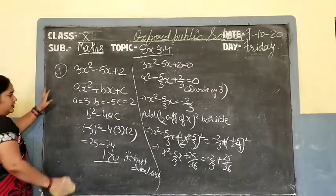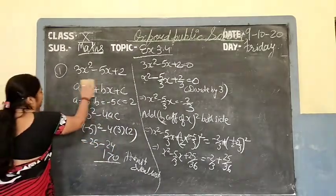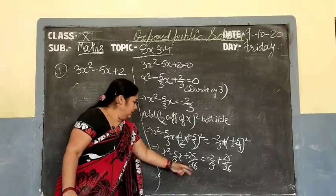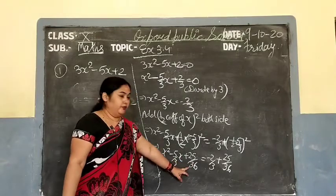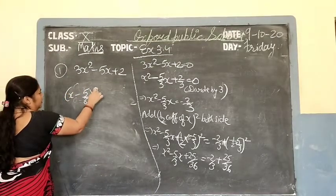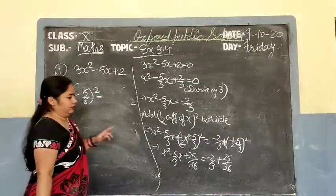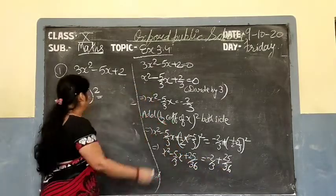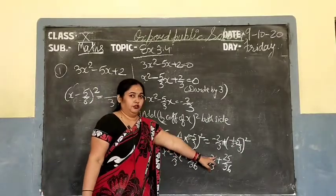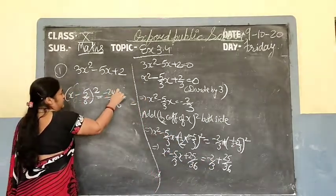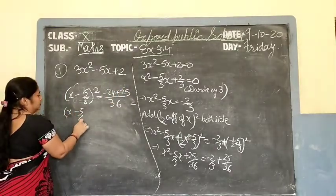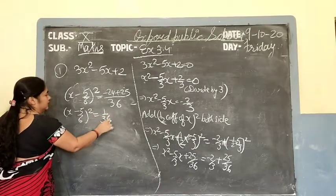The left side takes the form a square minus 2ab plus b square. So it becomes x minus 5 upon 6, whole squared. On the right side, take LCM of 3 and 36, which is 36. Multiply minus 2 upon 3 by 12 to get minus 24 plus 25 upon 36, giving 1 upon 36. So x minus 5 upon 6 whole square equals 1 upon 36.